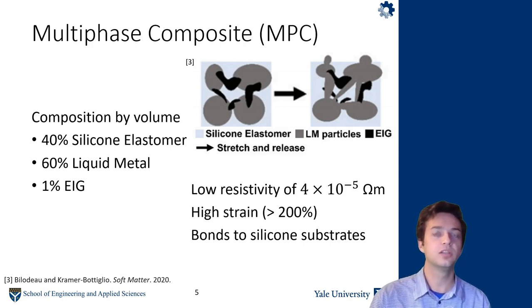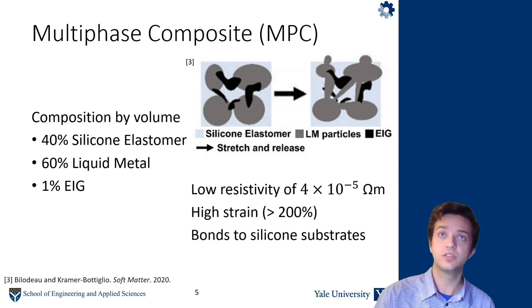So MPC was really desirable for our application because it has a low electrical resistivity. It's capable of high strains greater than 200%, and it bonds well to silicon substrates. It retains the properties of its host, silicon. And so this was a very suitable choice for our sensor material. But I will reiterate that any highly stretchable electrode with a sufficiently low resistance will do the job.